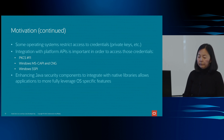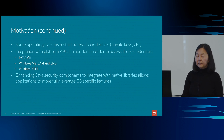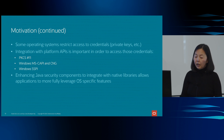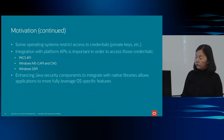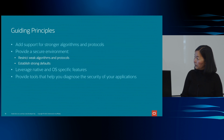Another important motivating factor for evolving security is native integration. Some operating systems restrict access to credentials, for example private keys. Integration with platform APIs is very important, and some important platform APIs include PKCS11, Windows MSCAPI, and Windows SSPI.